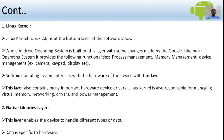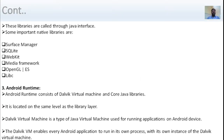The native libraries layer enables the device to handle different types of data, specific to the hardware. These libraries are also called the Java interface. Some important native libraries are: Surface Manager, SQLite, WebKit, Media Framework, OpenGL ES, and Libc.